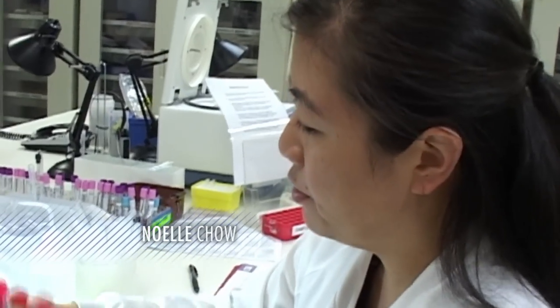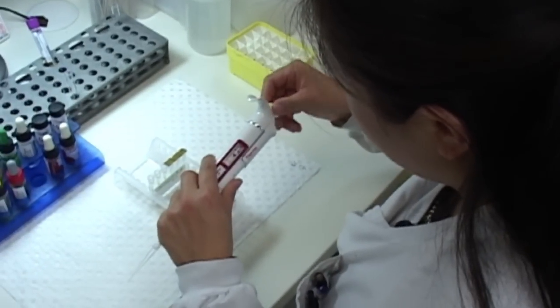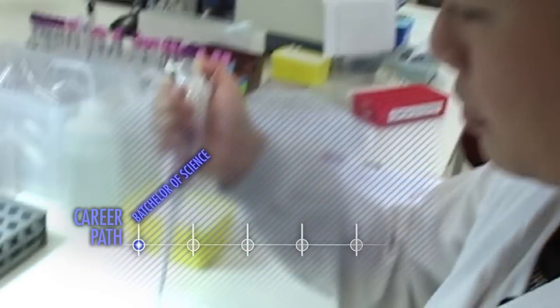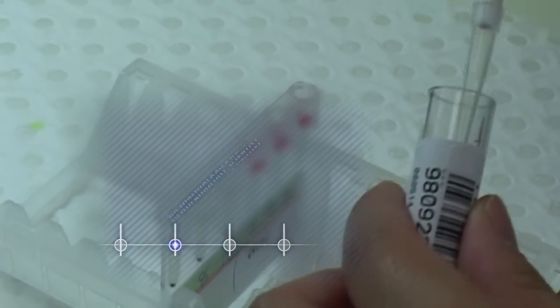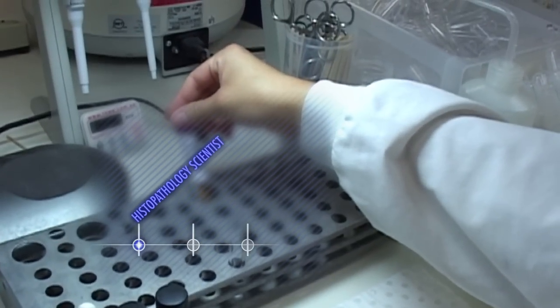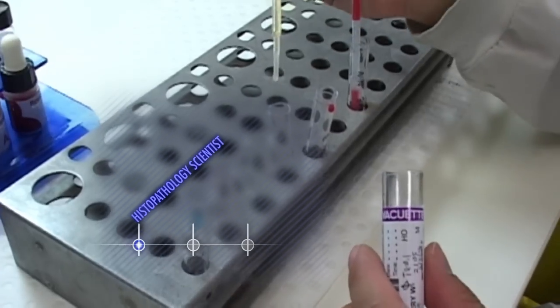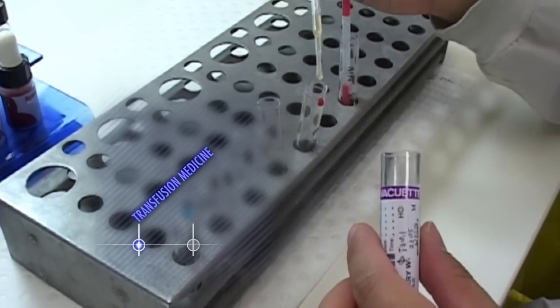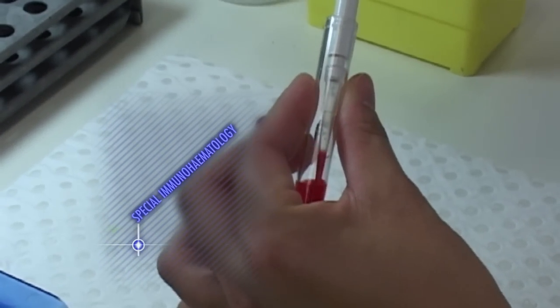My name's Newell Chow and I work for Pathwest at Royal Perth Hospital. I started off with a Bachelor of Science in Medical Science at Curtin University and then I did an extra year of postgraduate honours. I then came out and worked as a casual scientist at Fremantle Hospital in the histopathology department and then eventually I started my work in blood bank or transfusion medicine. I work in special immunohematology.